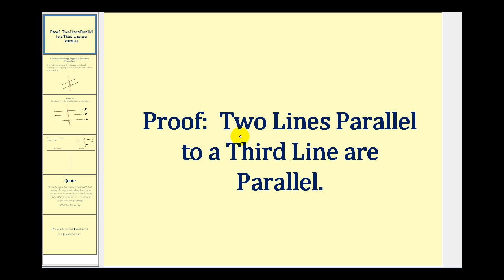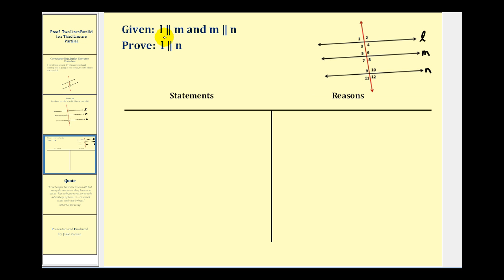Welcome to a proof of the theorem that states two lines parallel to a third line are parallel. So we want to prove that if line L is parallel to line M and M is parallel to line N, then it follows that L is also parallel to N. Let's see if we can outline a strategy.